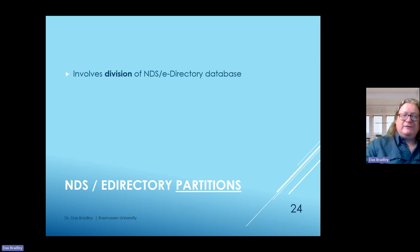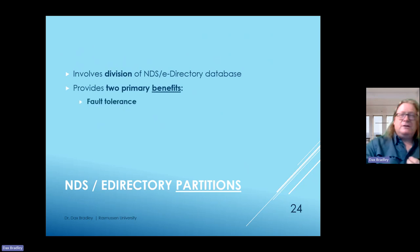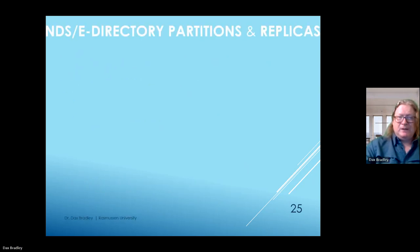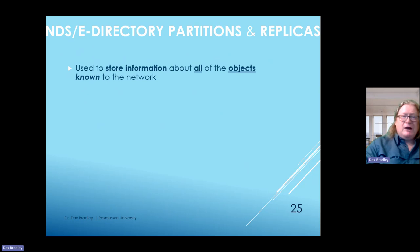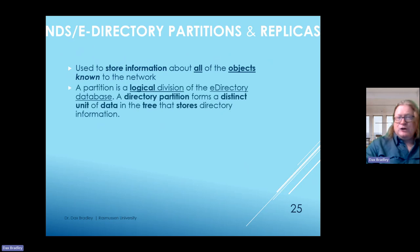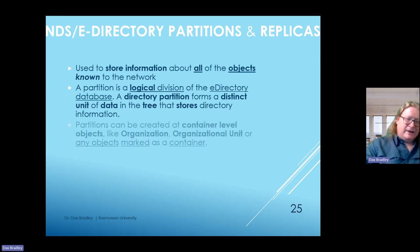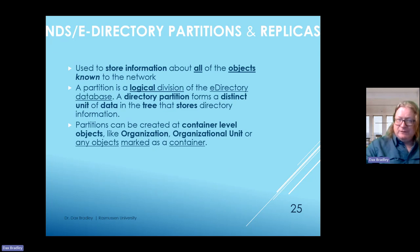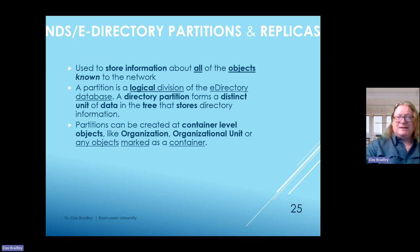Partitions involve creating a division of the NDS or eDirectory database, and they provide two primary benefits: fault tolerance and an increase in performance because they are more efficient. NDS eDirectory partitions and replicas are used to store information about all objects known on the network—functioning as a logical division of the eDirectory database. Partitions can be created at a container-level object like organization, organizational units, or any object established as a container.